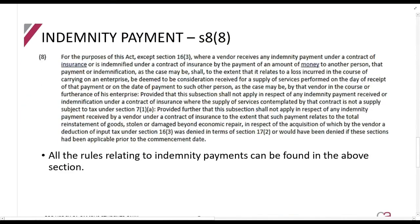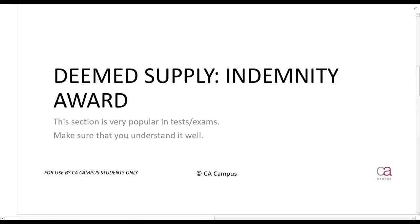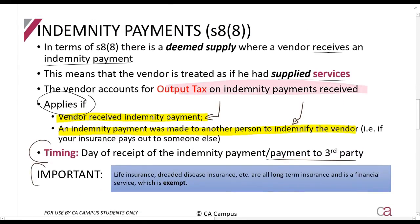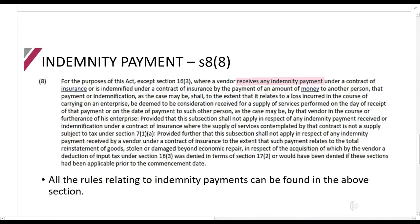Here's Section 8.8 from the Act and it tells us everything that we need to do. It says, for the purposes of this Act, except Section 16.3, where a vendor receives an indemnity payment under a contract of insurance - I'm just going to quickly take you back. Remember I said there's two situations. The first one is when we receive the payment. Or, we then pay another person under a contract of insurance. Or is indemnified under a contract of insurance by the payment of an amount of money to another person. So there's the two situations. That payment or indemnification, as the case may be, shall, to the extent that it relates to a loss incurred in the course of carrying on an enterprise.